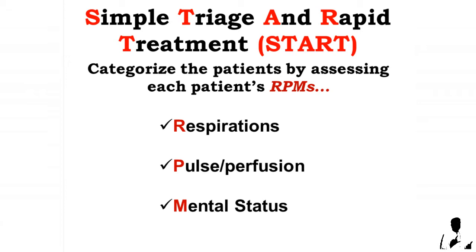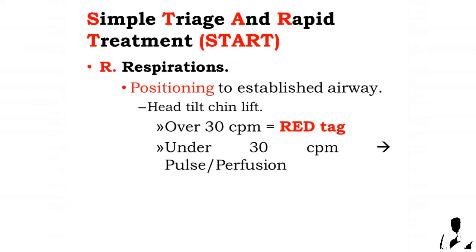We will utilize the mnemonic RPM: R for Respirations, P for Pulse or Perfusion, M for Mental Status. For Respirations, attempt to position the head to establish the airway. If respirations are over 30 cycles per minute, proceed to the next parameter.